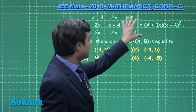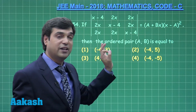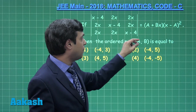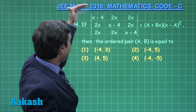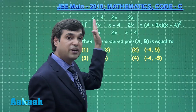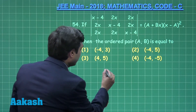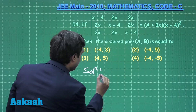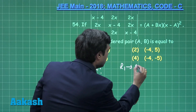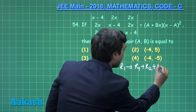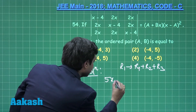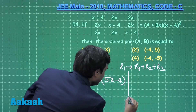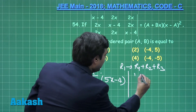Moving to question number 54 from determinants. A determinant is given equal to (a + bx)(x − a)², and we need to find the ordered pair (a, b). Apply the row operation R1 → R1 + R2 + R3. We observe that (5x − 4) can be taken as a common factor, giving (5x − 4) multiplied by a determinant with first row 1, 1, 1.